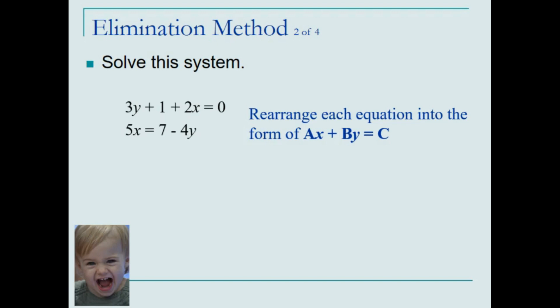As you can see, this first equation is not in standard form. We'd like to have 2x in front of 3y, and the 1 needs to go to the other side. So subtracting 1 from each side and using commutative property, we've transformed the first equation.